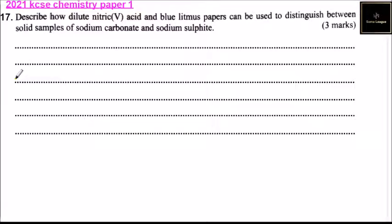Question number 17: describe how dilute nitric acid and wet blue/red litmus paper can be used to distinguish between solid samples of sodium carbonate and sodium sulfite.